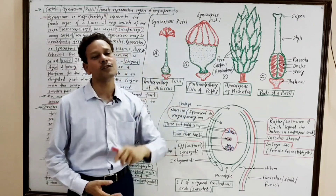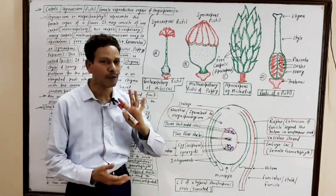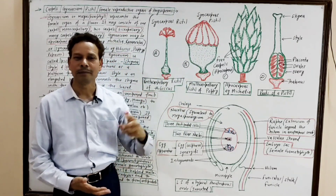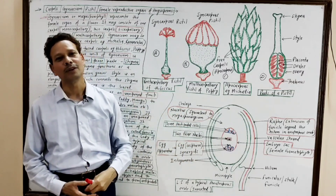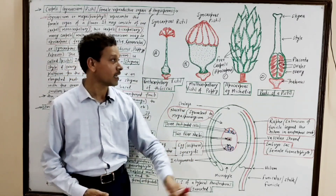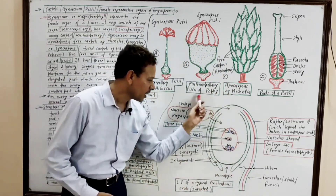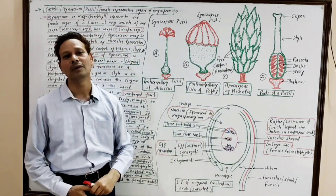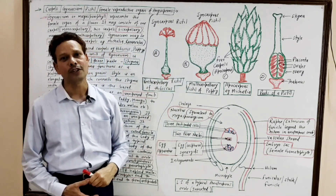Dear students, in this lecture on angiosperms, today I will cover carpel, pistil, and gynoecium — the female reproductive organ of angiosperms — as well as the structure of an ovule, the integmented megasporangium.